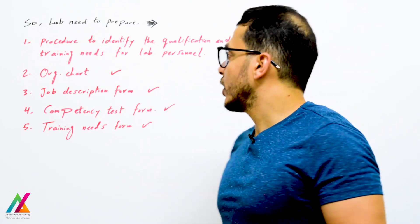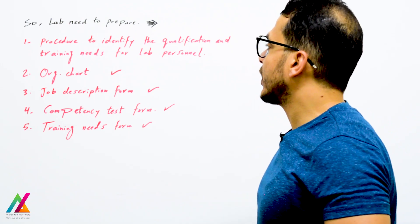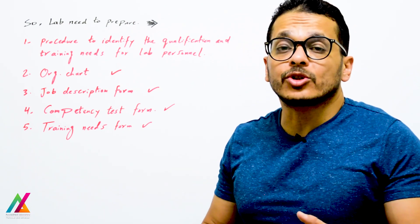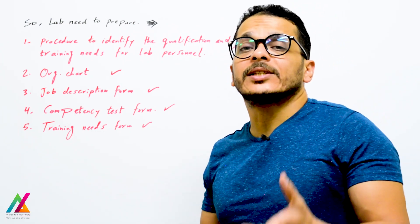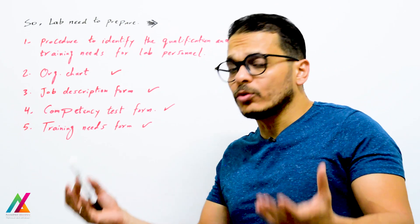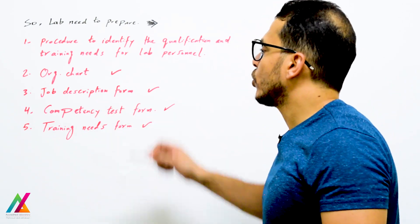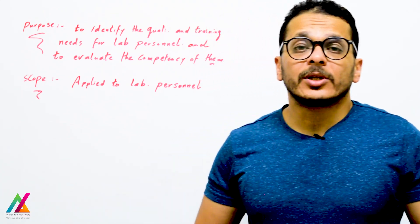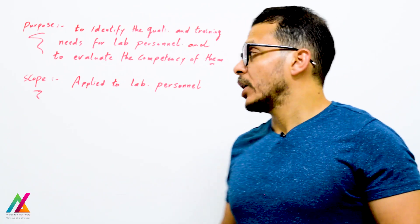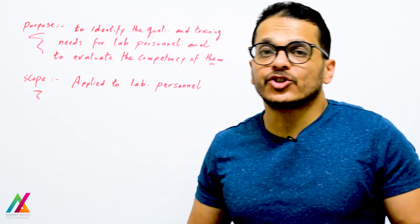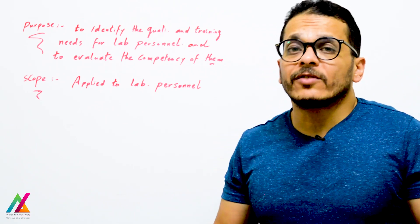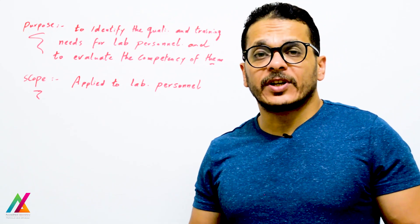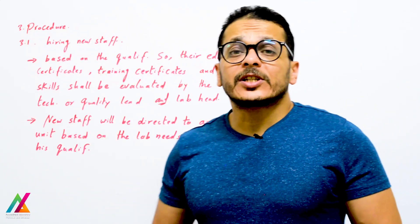The lab needs to prepare for personnel: a procedure to identify qualification and training needs; an organization chart including top management, lab head, technical lead, quality lead, and training officer; job description forms; competency test forms; and training needs forms. A procedure for personnel requirements has been prepared — its purpose is to identify the qualification and training needs for lab personnel and to evaluate their competency. Its scope covers all lab personnel working in areas affecting lab activities and results.